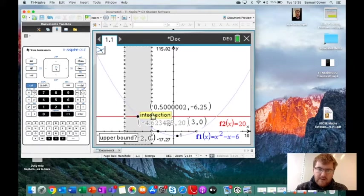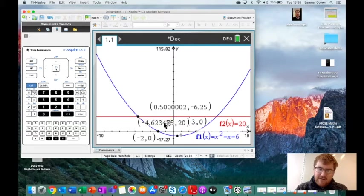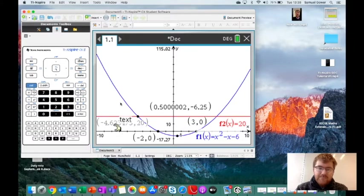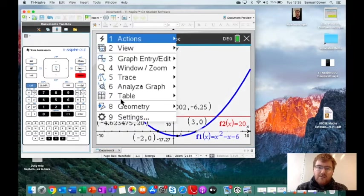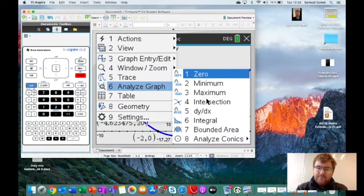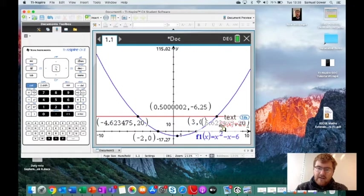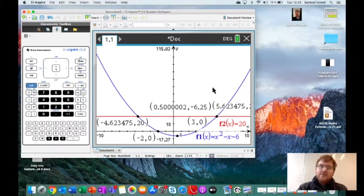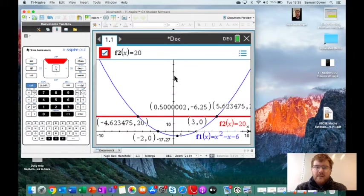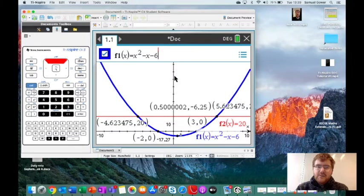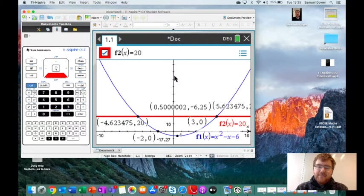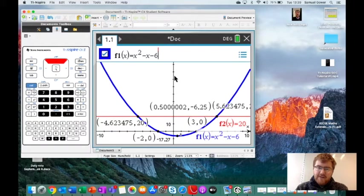This allows us to find the intersection point where they cross. We click before, we click afterwards, and then we've got our value. Likewise, to find the other one we go to Analyze Graph, Intersection, click before, click after, and then we have 5.623475. That allows you to solve the equation, so this would be the solution to x squared minus x minus 6 equals 20.